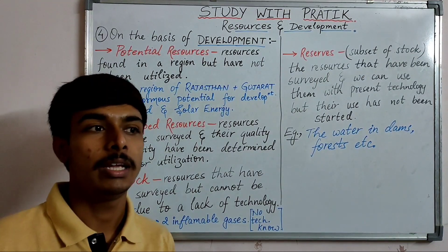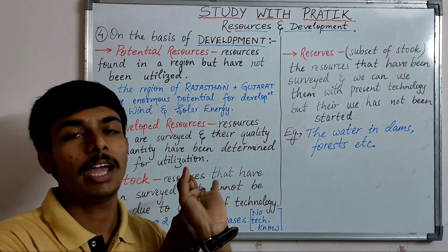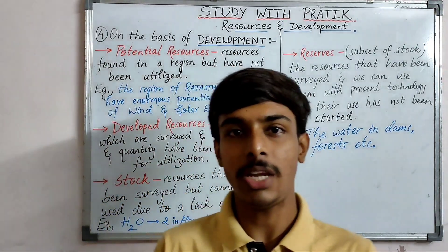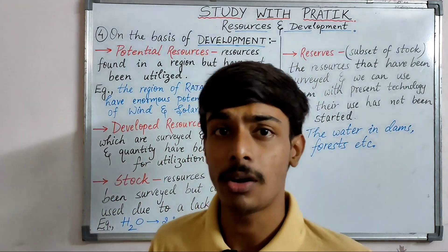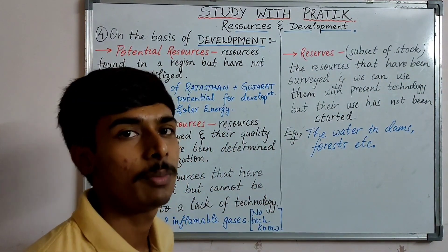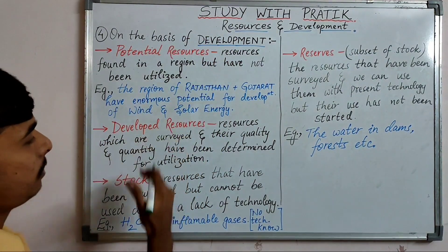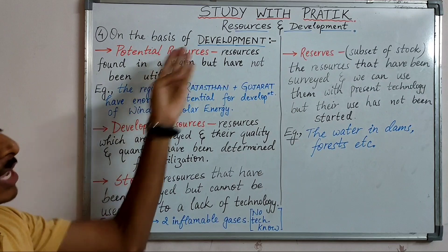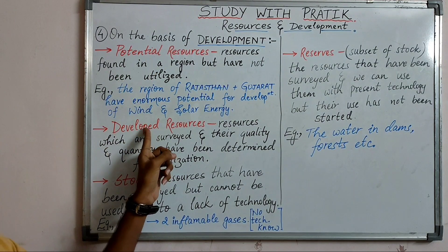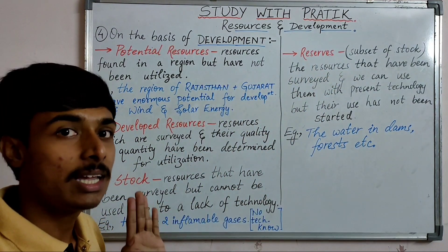So we have discussed the classification of resources on the basis of origin, exhaustibility, and ownership. Now the final one — the classification of resources on the basis of development. There are four subtypes: potential, developed, stock, and reserves.